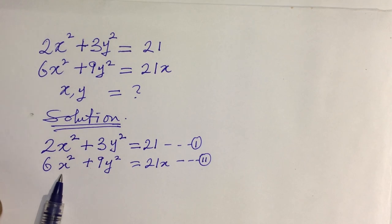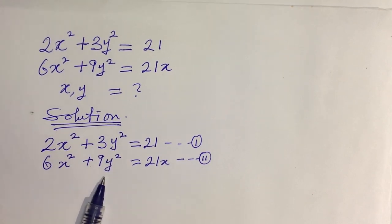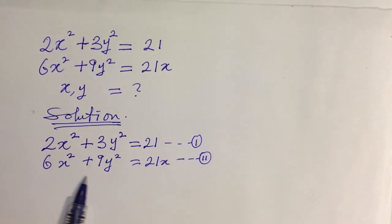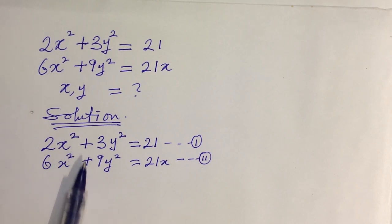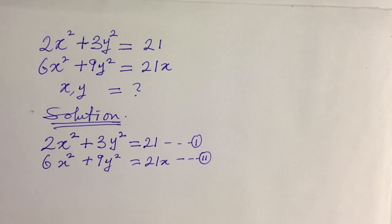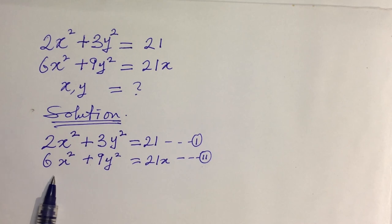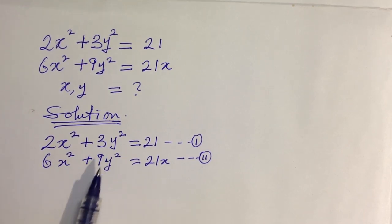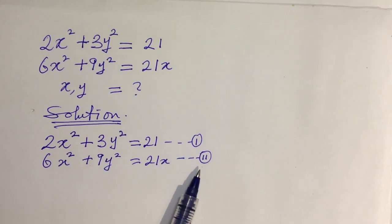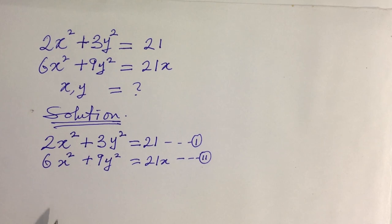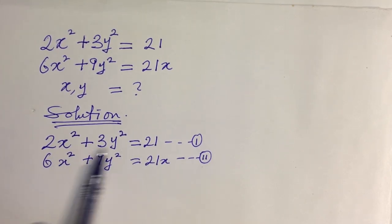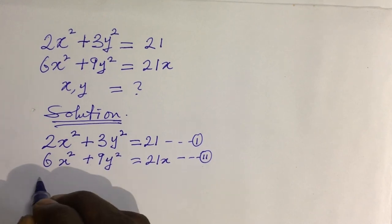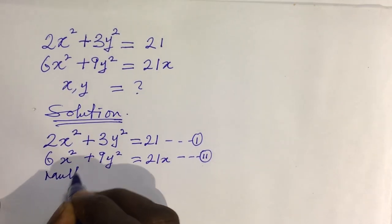If you look carefully, you'll discover we have x² and y² in both equations. We can subtract one equation from the other, but before we do that we need to make the coefficients of x² or y² the same in both equations. To do that, we multiply the whole of Equation 1 by 3.